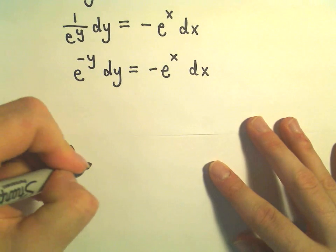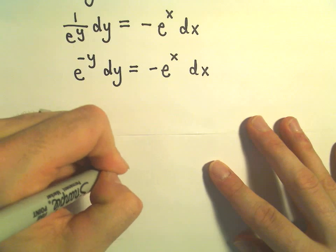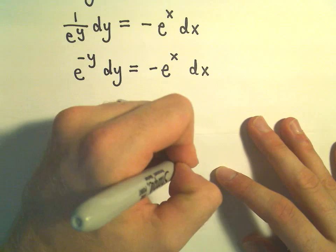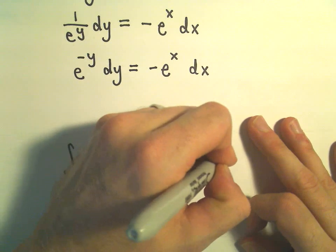So I'm going to integrate the left side, e to the negative y dy. I'm going to integrate the right side, negative e to the x dx.